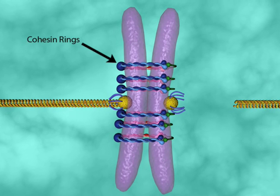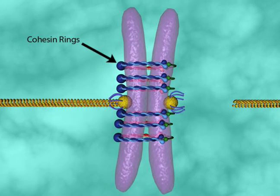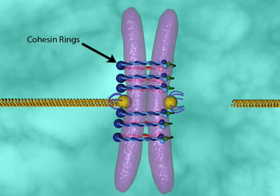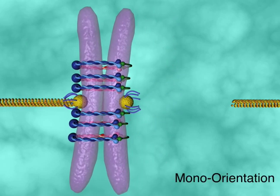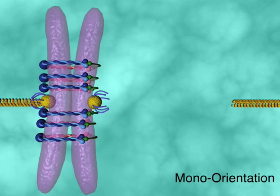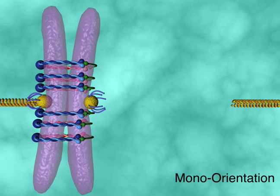If two chromatids become attached to tubes from the same pole, both copies would be pulled to one side, creating a daughter cell with two copies of a chromosome and another cell with no chromosome. Incorrect attachments such as these are called mono-orientation.